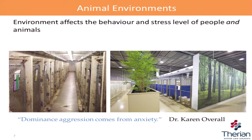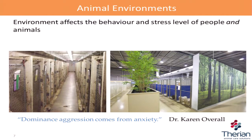The environment itself affects the behavior and stress levels of both people and animals. In one example you can see all the dogs can see each other across a small corridor — you can imagine the aggression, or some dogs hiding in a corner. Versus using visual barriers to stop dogs from seeing other dogs across the aisle or out in yards. Just stopping dogs from seeing other dogs can reduce your noise levels by around 50 percent — we've seen that over and over.